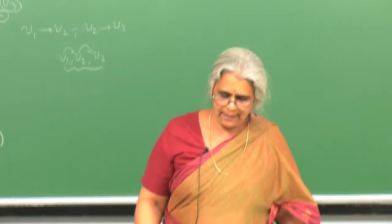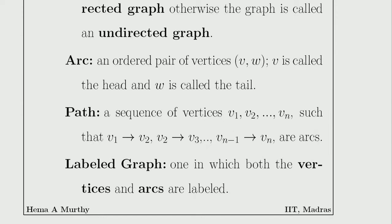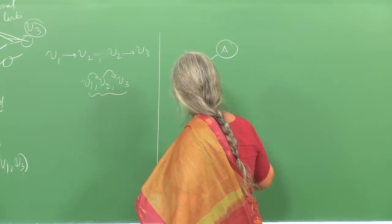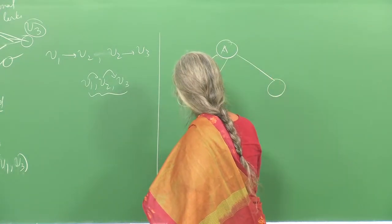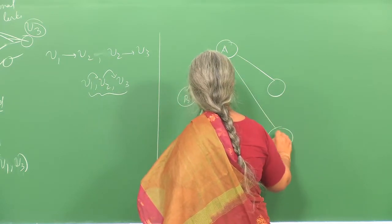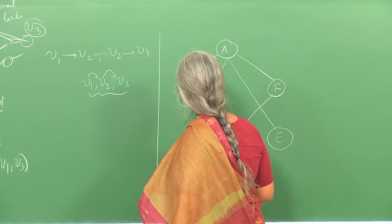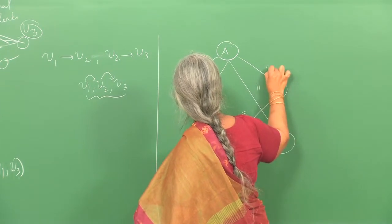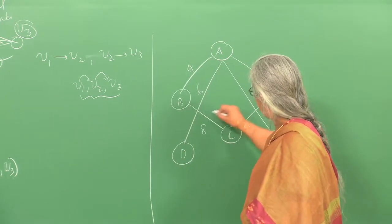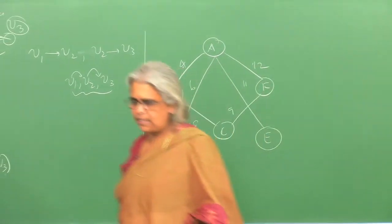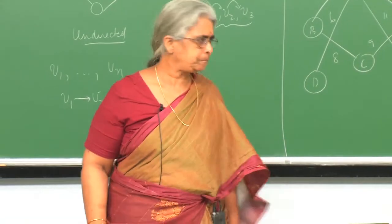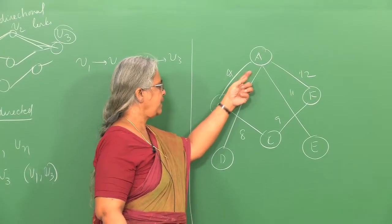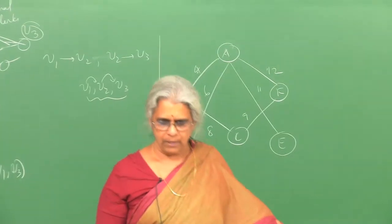You can have both labeled and unlabeled graphs, but we will focus on labeled graphs. In a labeled graph, vertices are labeled and edges can have weights — for example, 4, 6, 8, 9. Both edges and nodes can be labeled. These weights could correspond to, say, the amount of time it takes to travel from point A to point B.